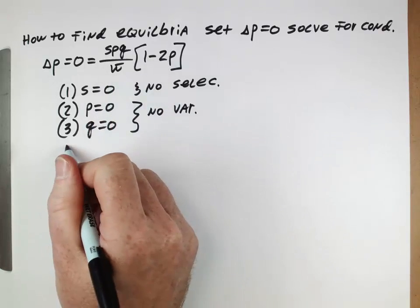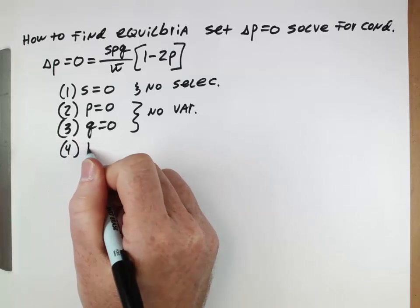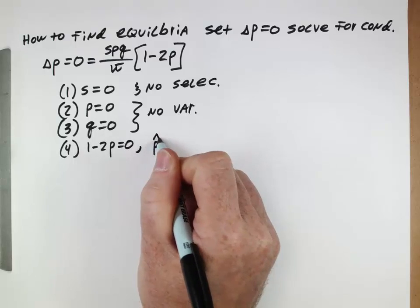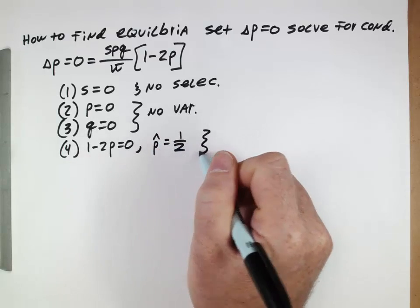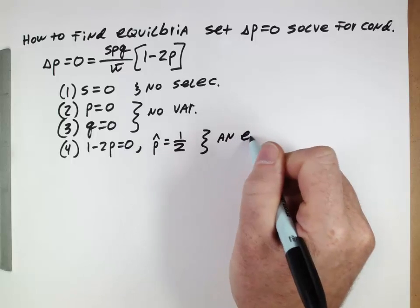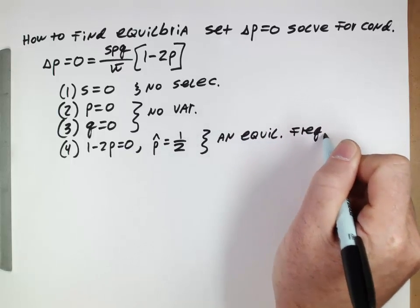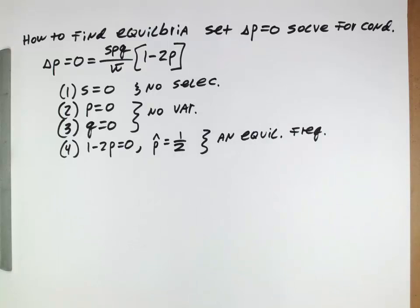And then the only other way that this can be equal to 0 is our fourth option. When 1 minus 2P is equal to 0, which gives us our equilibrium frequency of 1 half. This is an equilibrium frequency, right? So genetic variation that stays the same from generation to generation.